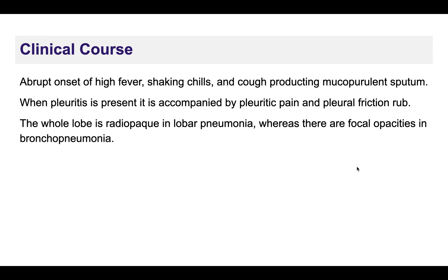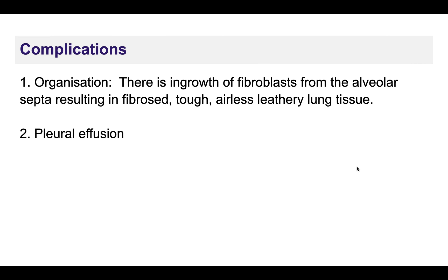The clinical presentation of pneumonia includes high fever, chills, cough with mucopurulent sputum. Pain can be higher if pleuritis is present, causing pleuritic pain. A pleural friction rub can also be present. This gives an overview of the clinical presentation.